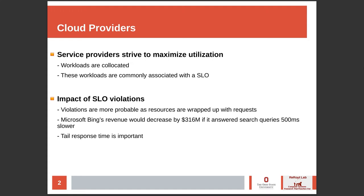A company wants to mitigate as many SLO violations as possible because too many will have a negative impact on their finances. For example, Microsoft Bing's revenue would decrease by $316 million if it answered search queries 500 milliseconds slower. This shows how important tail response times of requests are to cloud providers.